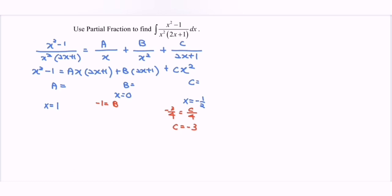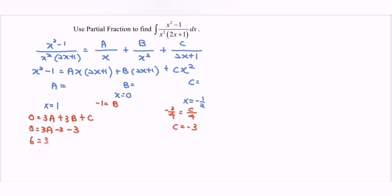Next, let's find the value of A. Substitute x equals 1. For the left-hand side we have 0, which equals 3A plus 3B plus C. Substitute the values of B and C: 0 equals 3A minus 3 minus 3. Simplifying, we get 6 equals 3A, so A equals 2.